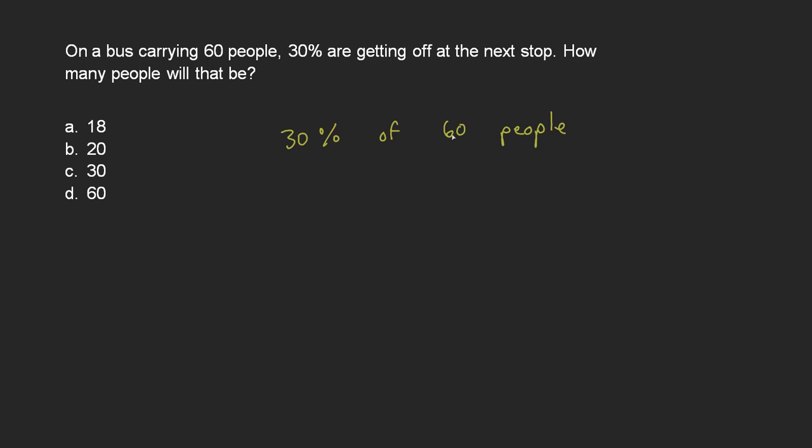So I need to know 30% of 60 people. Well, one little trick with mathematics and language is that 'of' can be replaced with multiplication. So this is 30% times 60.